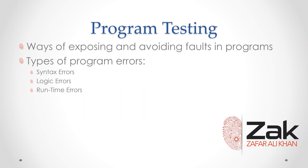Faults in an executable program are frequently rooted in the design of the program. Fault avoidance starts with the provision of comprehensive and rigorous program specifications at the end of the analysis phase of the program development lifecycle, followed by the use of formal methods such as structure charts, state transition diagrams, and pseudo code at the design stage.